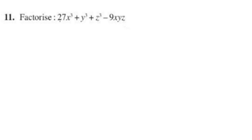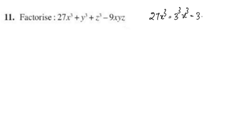We have 27x³, which is 3 cubed. So 27x³ equals 3x, the whole cube — that is, (3x)³.